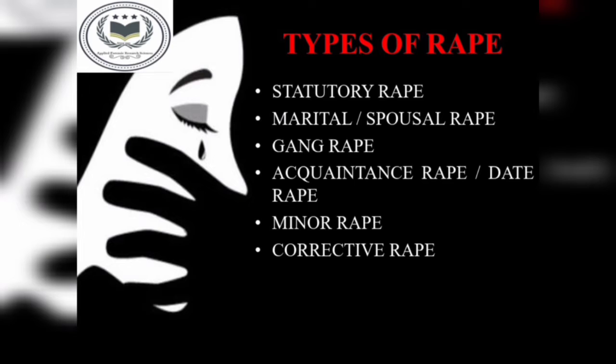Acquaintance rape is when the victim and the accused both know each other. Minor rape is when a child is raped by an adult. Corrective rape is a criminal practice in South Africa where men rape lesbian women as a means of curing the women of her sexual orientation.